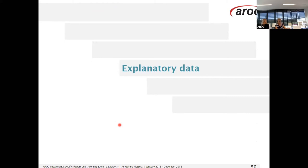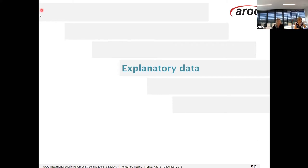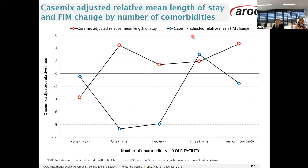Now I'll hand over to Elise to take you through the explanatory data. Thank you Nicole. Now we're going to move into a section of the report that looks at explanatory data. The following graphs should be considered as part of the overall picture of rehabilitation outcomes. These graphs were developed following services' interest in the impact of comorbidities and complications on length of stay and FIM change — clinicians were telling us that there was an impact on rehab outcomes where a comorbidity or complication was reported, but there was no definitive data to support the anecdotal evidence.